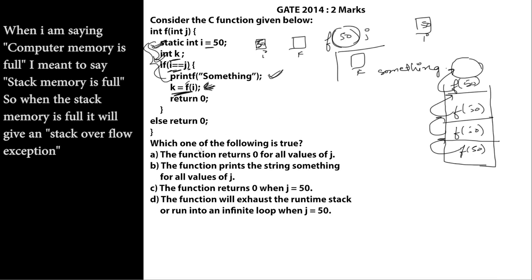Now let us see the options. Option a says the function returns 0 for all values of j. This is wrong — the function returns 0 only when the value of j is not equal to 50. When j equals 50, the function does not return 0; it goes into an infinite loop. Therefore option a is wrong.